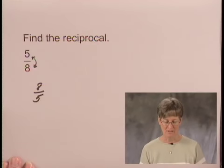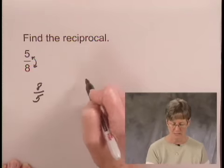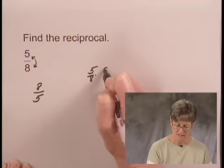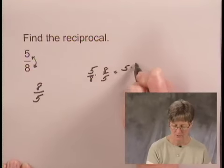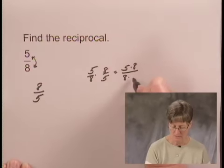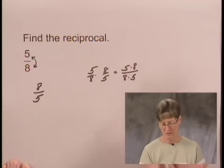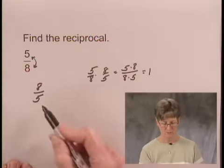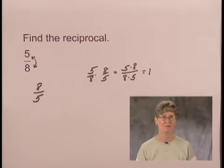We can show that this is in fact the reciprocal because we know that the product of reciprocals is equal to 1. And 5 eighths times 8 over 5 is equal to 5 times 8 over 8 times 5. We have the same number in the numerator and the denominator, so that equals 1. So we see that the reciprocal of 5 eighths is 8 fifths.